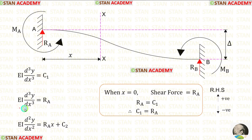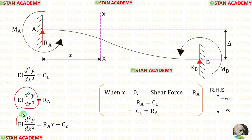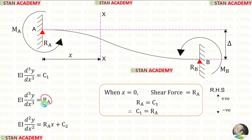Let us integrate this equation on both sides. When we integrate, we will get EI d²y/dx². When we integrate RA, we will get RAx. C2 is the constant.